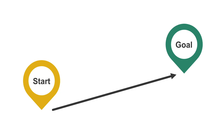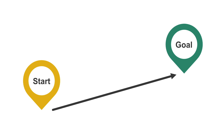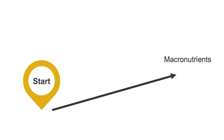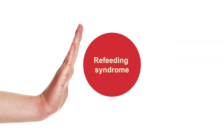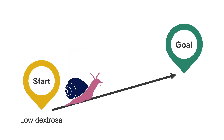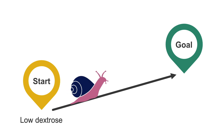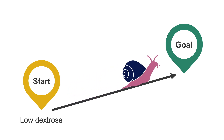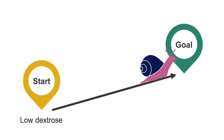Just like tube feeds, we won't be starting out at our goal order. When I say goal, I'm referring to macronutrients — specifically dextrose. The reason for this is to prevent complications from refeeding syndrome, which is only associated with dextrose. This can occur even in patients not initially identified as high risk. TPN should be started with a low amount of dextrose and slowly advanced to goal while monitoring tolerance. The higher the risk for refeeding syndrome, the longer it may take to reach goal TPN.